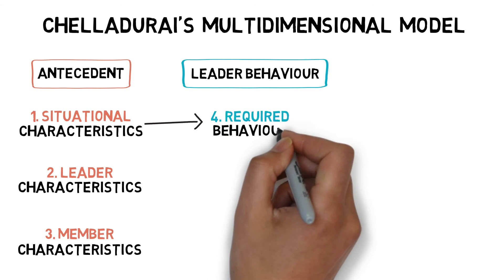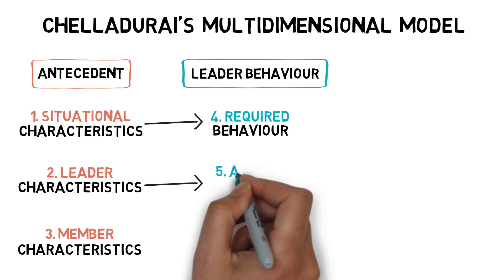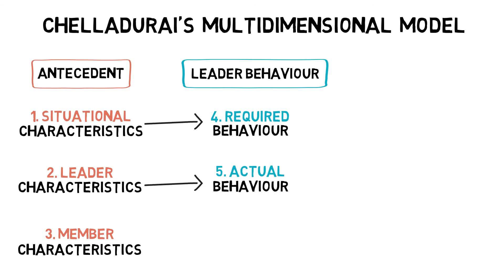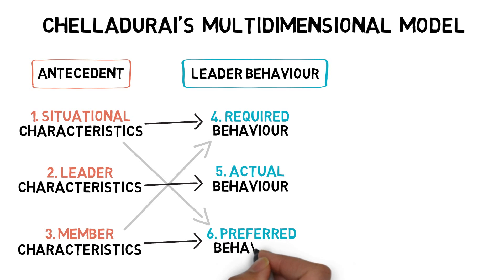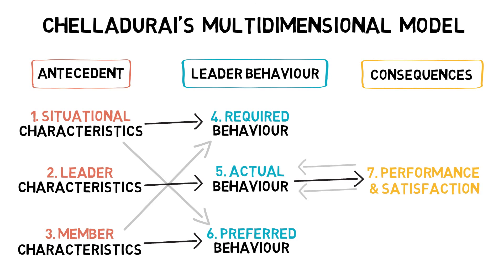Required behaviour is what is expected of a coach by team management. Actual behaviour is the way in which the coach normally goes about his job. And preferred behaviour is the way in which members prefer their coach to relate to them. The consequences of these factors will determine performance and satisfaction.